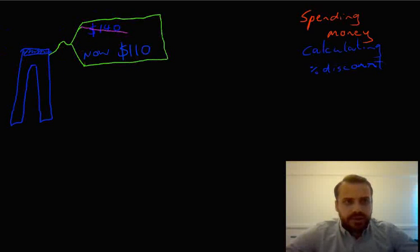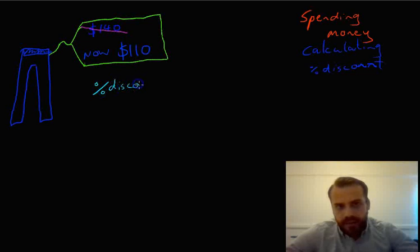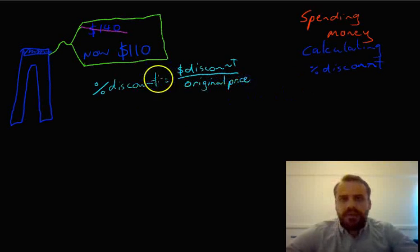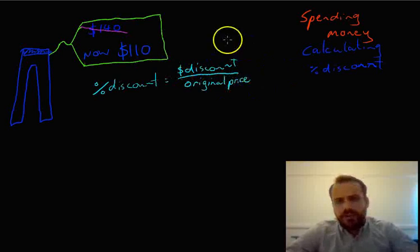So the way that we can work this out, it's pretty simple. We're trying to figure out a percentage discount. And our percentage discount is equal to the dollar discount divided by the original price. Okay, so there's a little more that we can do with that formula, but I'm going to leave it at that.